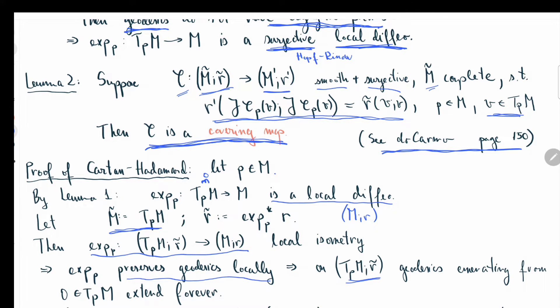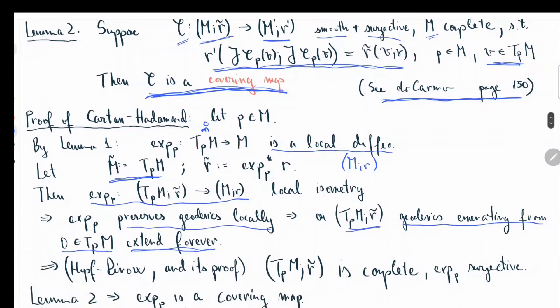You have a point where geodesics extend forever. So Hopf-Rinow and its proof gives you that T_p M with this specific choice of Riemannian structure has to be complete. Moreover, we knew from before, another application of Hopf-Rinow, that exp is actually a surjective map.